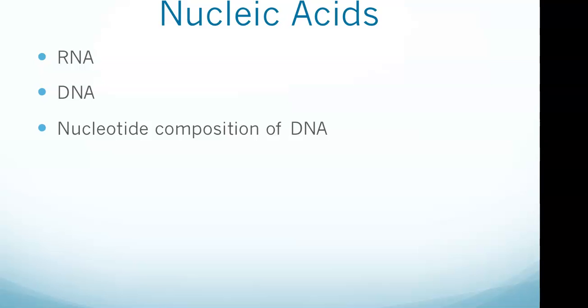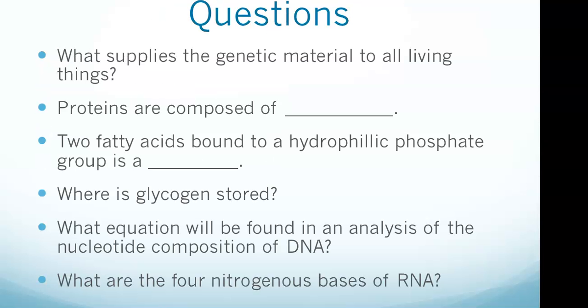All right, nucleic acids. They supply the genetic material for all living things, all living cells. The monomer for a nucleic acid is a nucleotide, which contains a phosphate group, a 5-carbon sugar, and a nitrogenous base. What we wanted to hear the most there on nucleic acids is that they supply the genetic material for all living cells. As we go back to the questions, you can see that very first one: what supplies the genetic material to all living things? That would be nucleic acids.